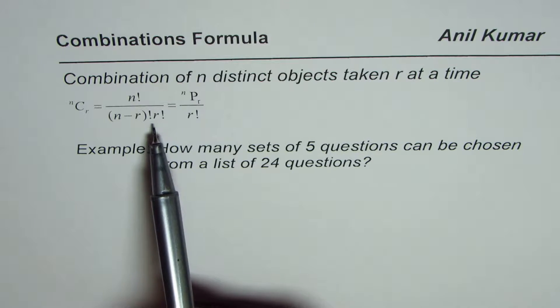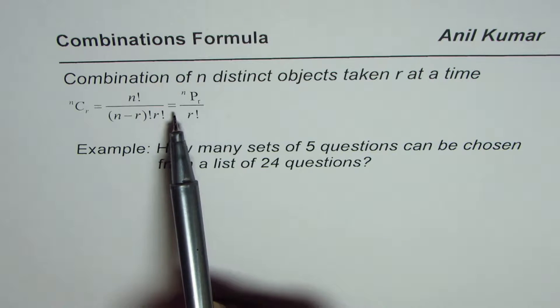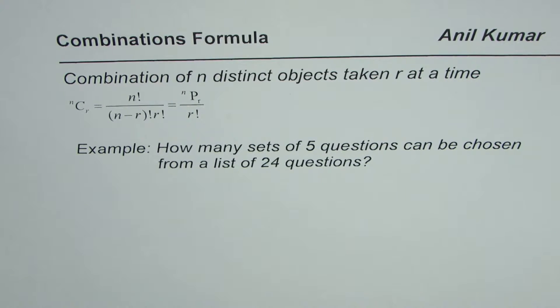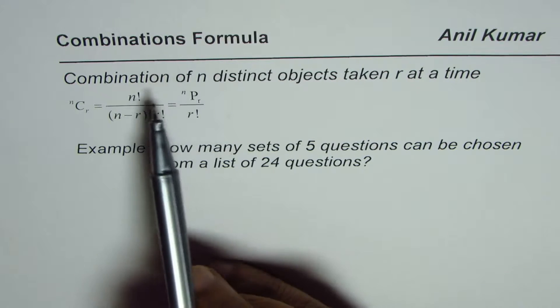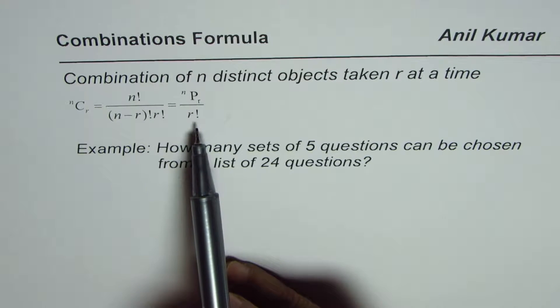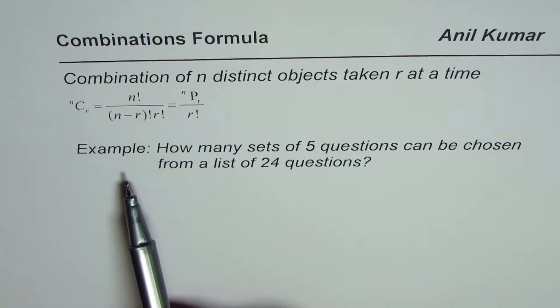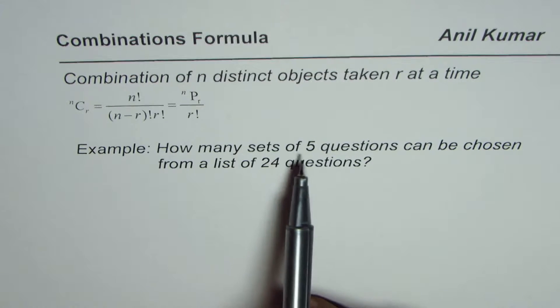It could also be written as nPr divided by r factorial. Whenever you're taking combinations, order is not important. That is the case here.